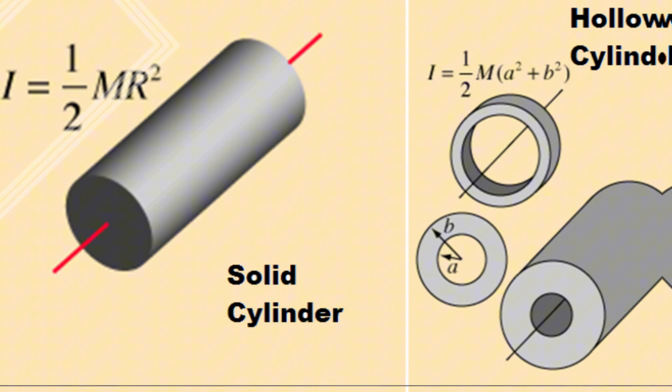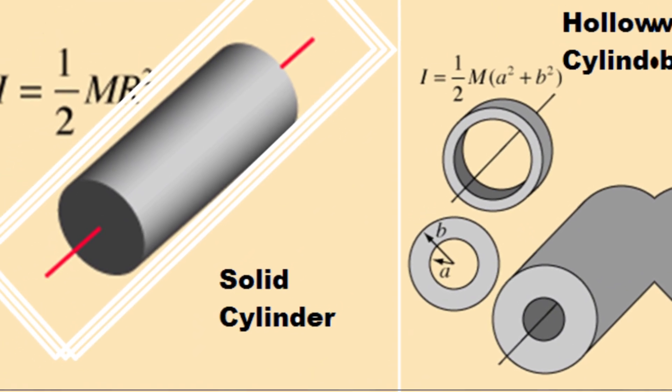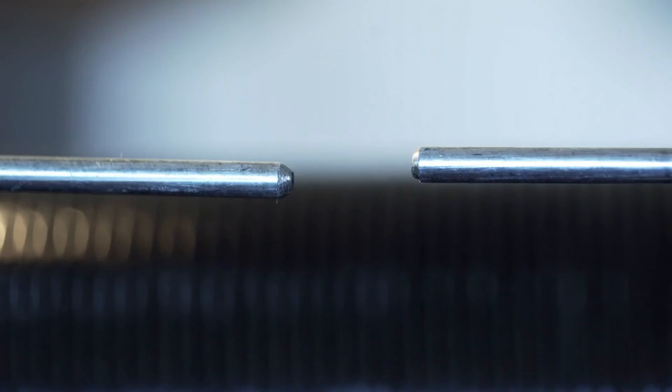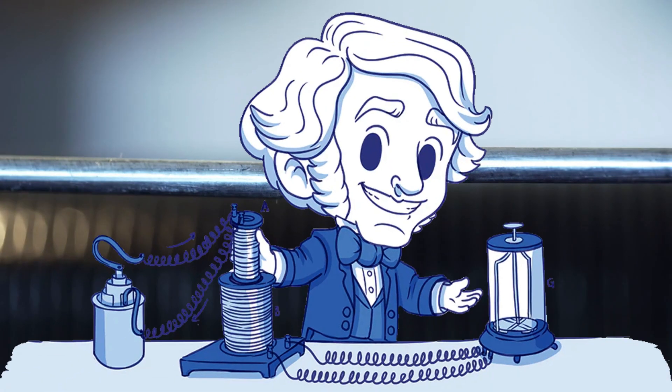A solid ferrite cylinder, same size, same material, produced no measurable voltage at any orientation, just as Faraday predicted.